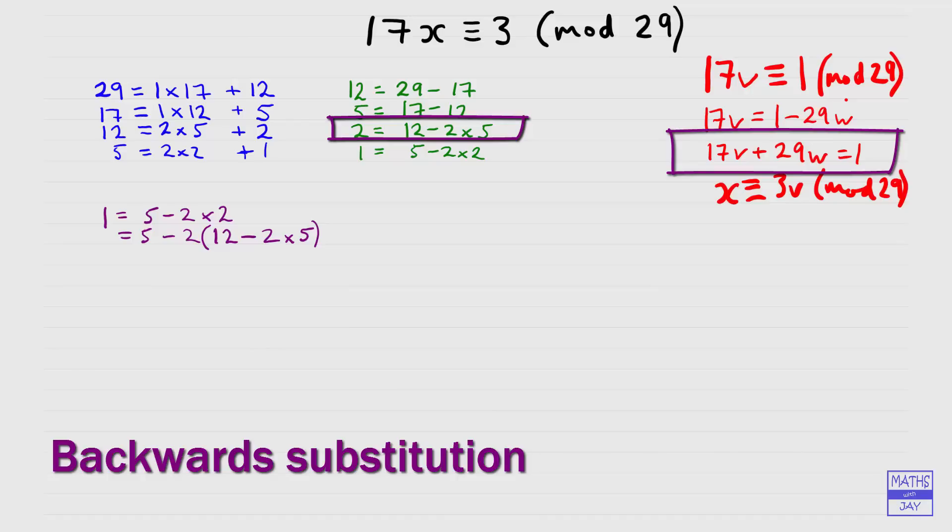And we can multiply out the bracket, so we'll leave that 5 for now. And we're going to have 2 times 12, or minus 2 times 12. Then we've got negative 2 times negative 2, so that will be plus 4 times 5. So you can see we've got a 5 and a 4 times 5, so that's 5 5s. So 5 times 5, and we've still got minus 2 times 12. So we've written 1 in terms of 5 and 12.